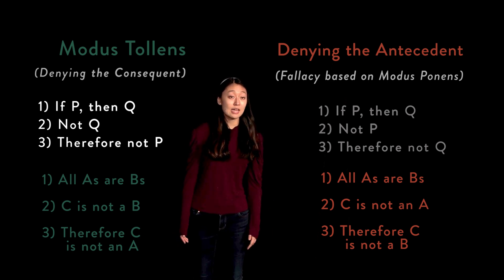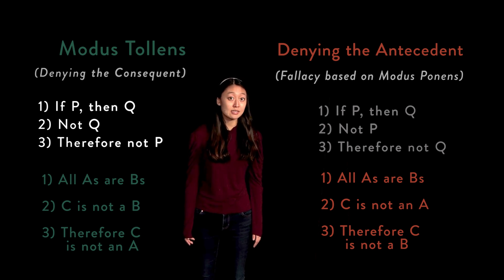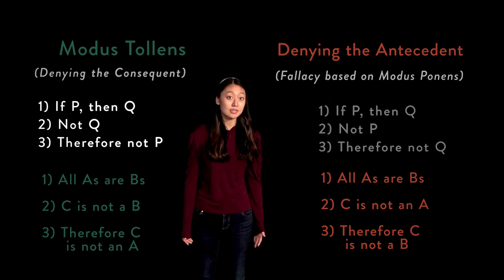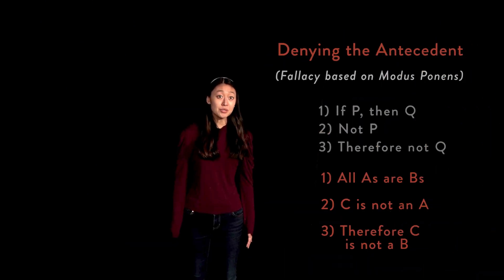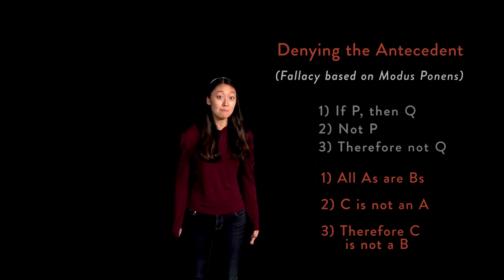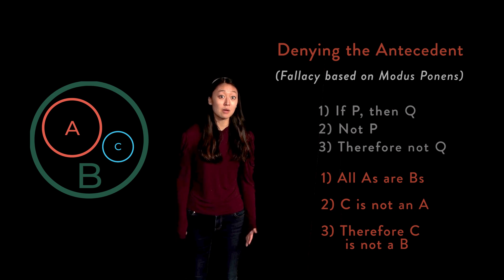The reason that this is a mistake is that the conditional links the truth of P to that of Q, such that all instances in which P is true also have Q as being true. However, there certainly can be cases in which Q is the case without P being the case. For the cases with only categorical propositions, the mistake can easily be seen when we realize that there might be some B's that are not A's. Therefore, just because something is not an A does not mean that the thing is not a B.